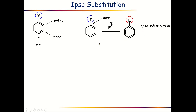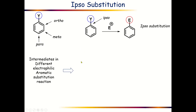This is a special type of electrophilic aromatic substitution reaction. What is the difference between the intermediates — or rather the carbocations — involved in different types of electrophilic aromatic substitution reactions? That is, what will be the intermediate when ortho, meta, or para substitution takes place? For that we need to draw the different intermediates for this particular derivative of benzene.